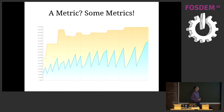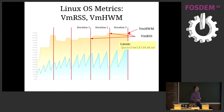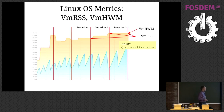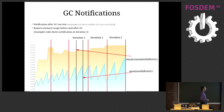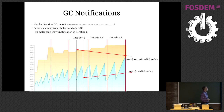So what kinds of metrics can I extract? What I implemented is using things the operating system gives us via /proc/self/status. There are two things of interest: the resident set size, and also the high watermark, which is the highest level of the resident set size the process had during its run. You can also use garbage collector notifications — you get a notification from the GC each cycle with information about used memory before and after the collection. I take the maximum of that and add it to the JMH results.